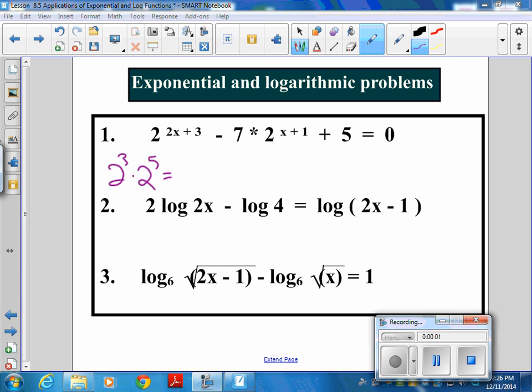What is 2 to the third times 2 to the fifth? 2 to the eighth. How did you get that? You just added 3 and 5, right? So you don't have any problem doing that. No problems. Everybody gets that. But for some reason, it doesn't happen logically for people backwards.